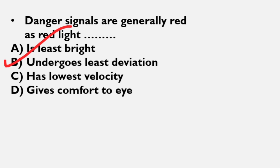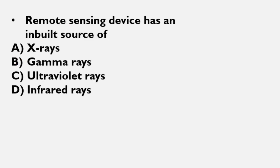In the first class, we learned that red light undergoes least deviation, that's why they are used in danger signals. Now second question: Remote sensing device has an inbuilt source of... x-rays, gamma rays, ultraviolet rays, or infrared rays. Its correct answer is option B, infrared rays.